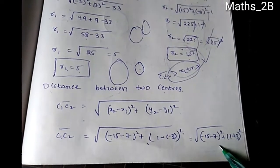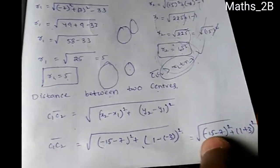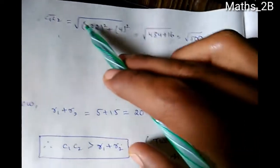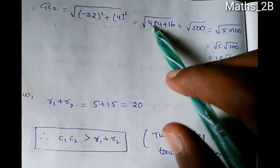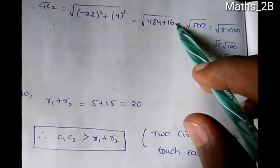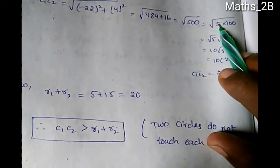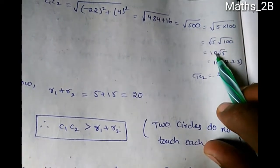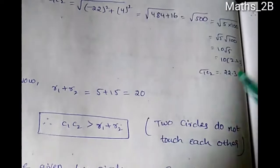Continuing: C1C2 = √(484 + 16) = √500. Now √500 = √(100 × 5) = 10√5 ≈ 10 × 2.23 = 22.3. So C1C2 ≈ 22.3. And R1 + R2 = 5 + 15 = 20. Since 22.3 > 20, the condition C1C2 > R1 + R2 is satisfied.